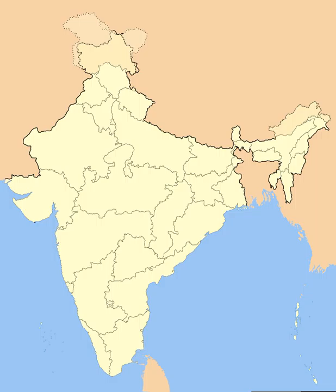The union territory of Puducherry was created in 1954, comprising the previous French enclaves of Pondicherry, Karaikal, Yanam, and Mahé. Andhra State was created on 1 October 1953 from the Telugu-speaking northern districts of Madras State. The States Reorganisation Act of 1956 reorganized the states based on linguistic lines, resulting in the creation of new states. Andhra Pradesh was created with the merger of Andhra State with the Telugu-speaking districts of Hyderabad State in 1956. Kerala was created with the merger of Malabar district and the Kasaragod Taluk of South Canara districts of Madras State with Travancore-Cochin.